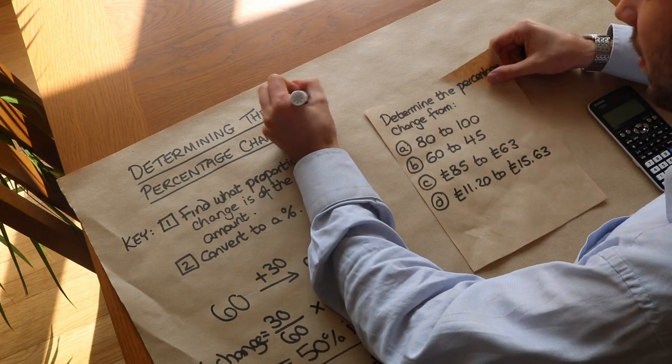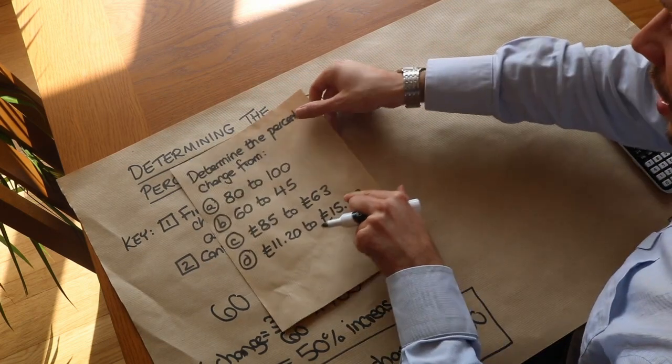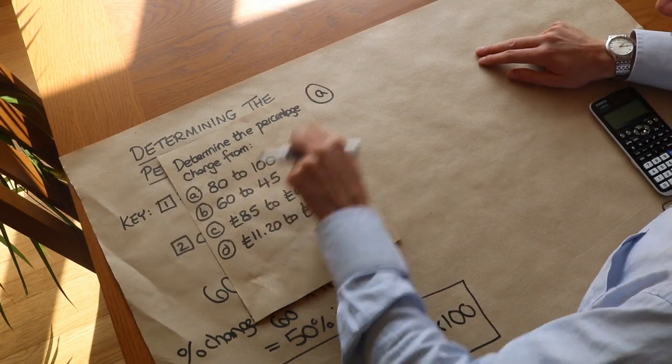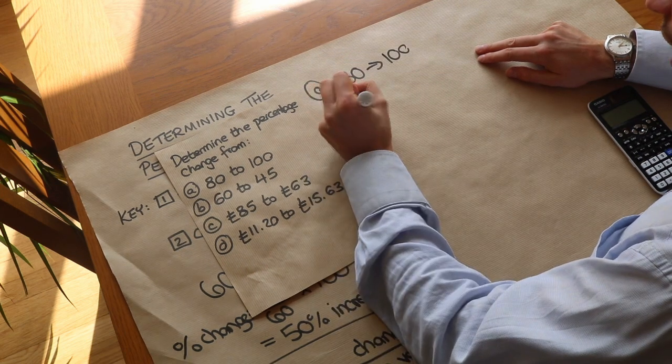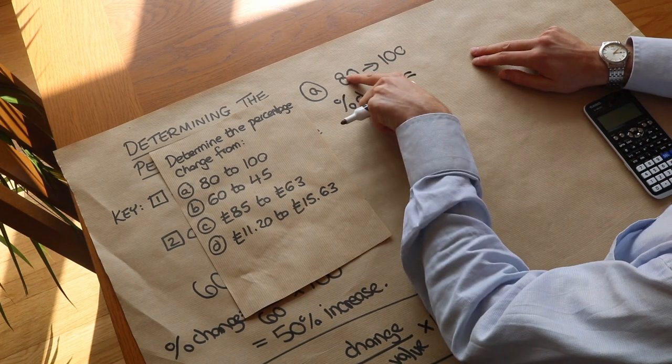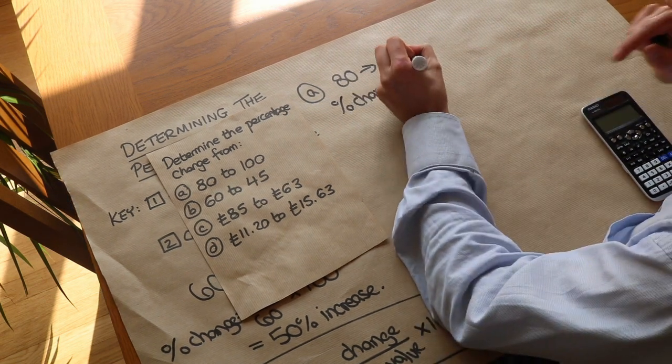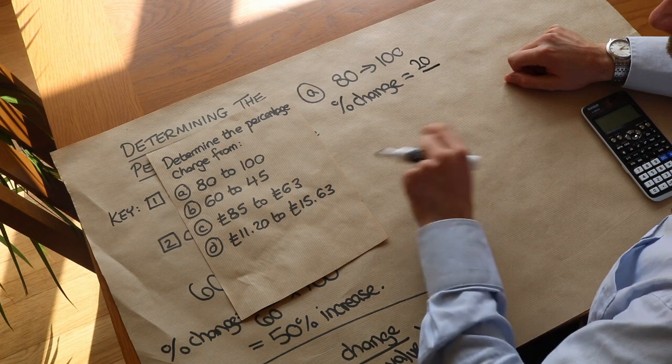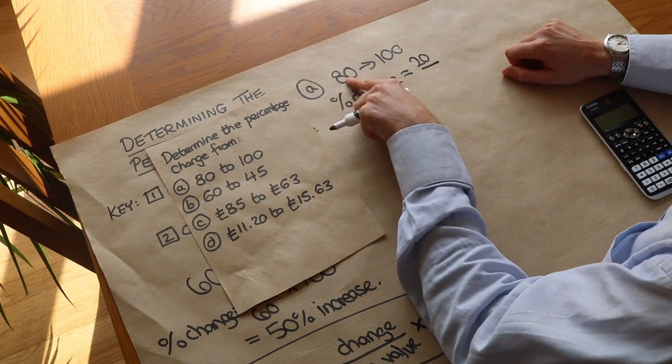Let's use it to solve these other problems. We want to determine the percentage change from 80 to 100. So the percentage change is just going to be what the actual change was. Well, the change from 80 to 100 is 20, and we do that as a fraction of the original amount, not the new amount.